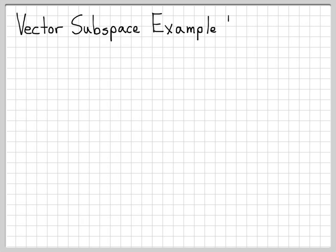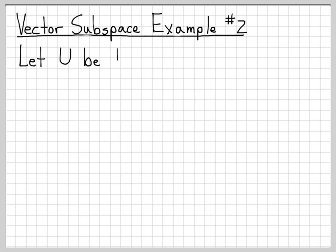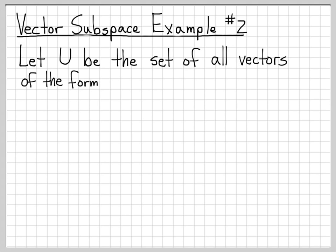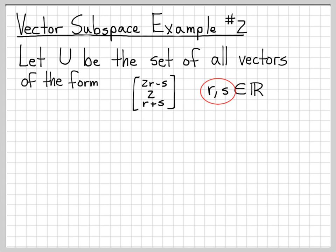Let's take a look at another subspace example problem. We're going to be working with a set U, which is the set of all vectors of length 3 with the form: first coordinate 2r minus s, second coordinate 2, and third coordinate r plus s, where r and s are arbitrary real-valued quantities. That's the set U we're going to be working with.